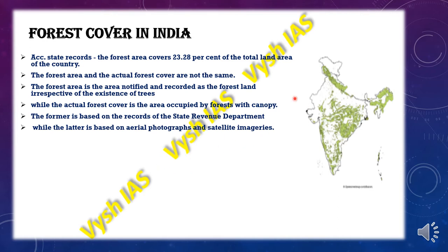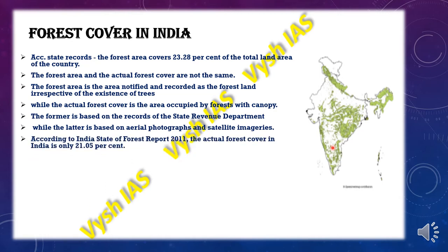This is the same as what happens when we see a mushroom. When seen from the top it looks like a round inverted U shape, but from the side or bottom view we can see there is a stick beneath. According to the Indian State of Forest Report of 2011, the actual forest cover in India is only 21.05%, and the difference from the recorded figure is because of the effect of the canopy.